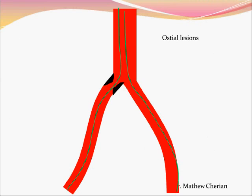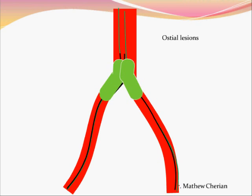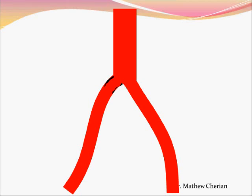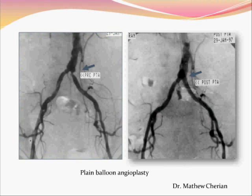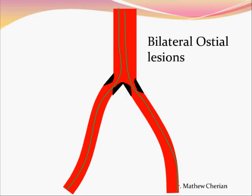When a focal stenosis is at the aortic ostium, the strategy changes. Wires are taken from both sides to perform the kissing balloon technique — balloons across both sides are dilated simultaneously to prevent snow-plowing of plaque onto the normal side. One must always use a balloon on both sides when treating ostial lesions. Here is a patient with an ostial stenosis treated successfully by bilateral kissing balloon technique. However, ostial lesions often require stents.